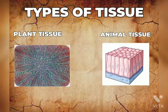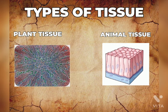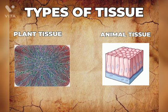Now I will tell you the difference between plant tissue and animal tissue. Firstly, plant tissue: the plant body is composed of different types of tissues to perform different functions. Animal tissue: animal tissues have different kinds of tissues to perform different body functions.